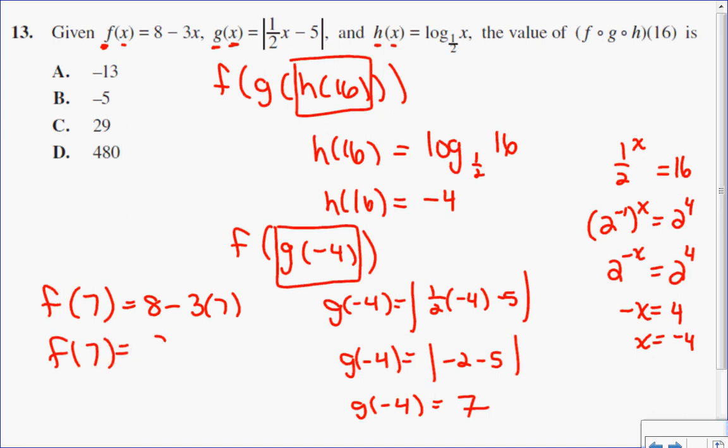So f of 7 is equal to 8, take away 3 times 7 is 21. And 8 take away 21 is negative 13. So for this question, the answer is A.